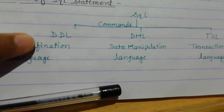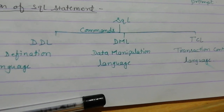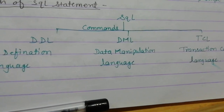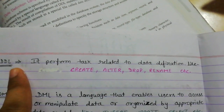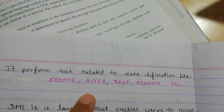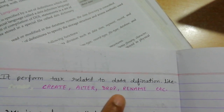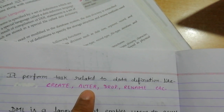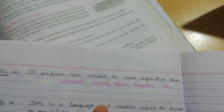When we think about DDL, there are multiple commands. First, we will see the statement and syntax, and after that we will perform it in a very easy way. DDL stands for Data Definition Language — it performs tasks related to data definition. The DDL commands include: create, alter, drop, rename, etc.